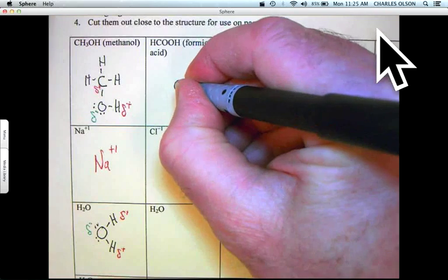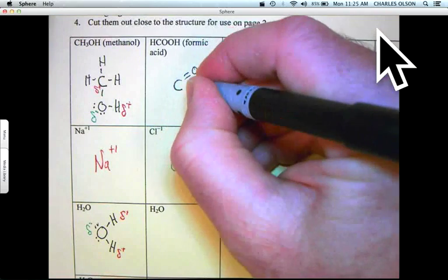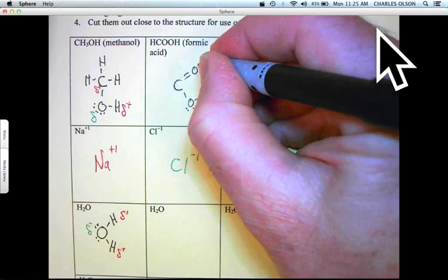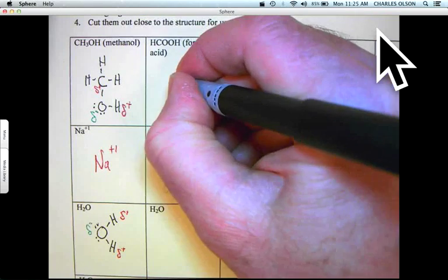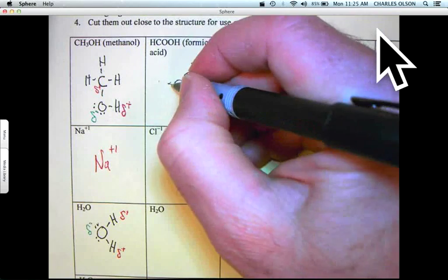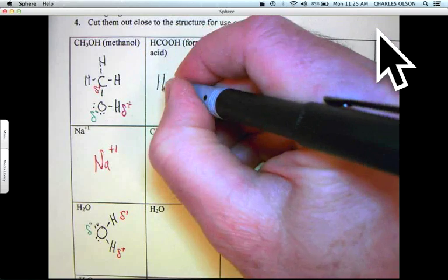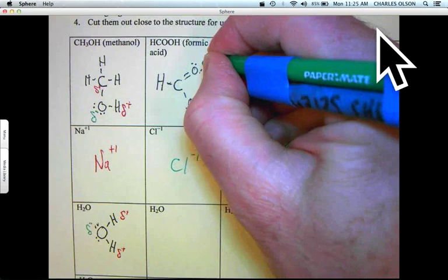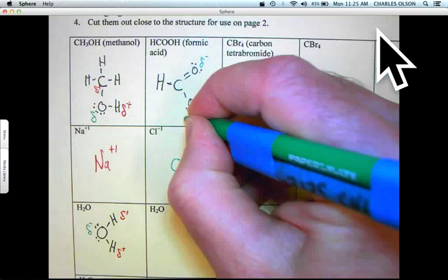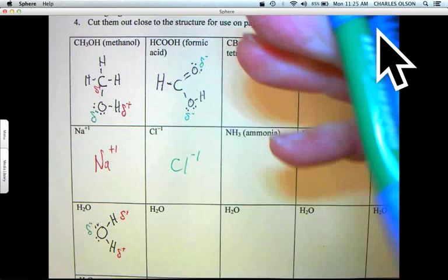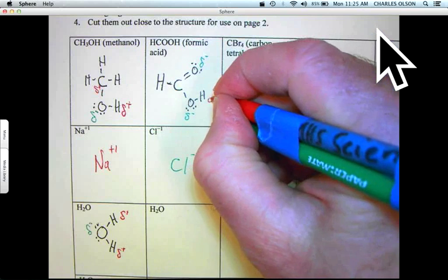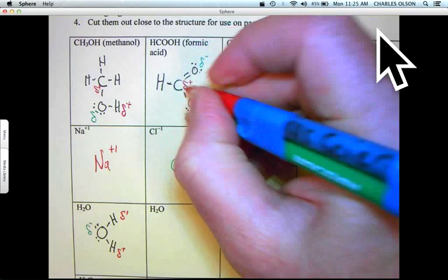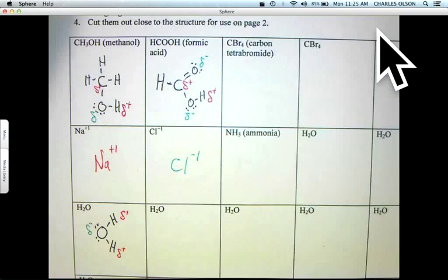Formic acid: COOH. Oxygen, of course, has double bonds. The carboxylic acid group is attached, in the case of formic acid, to a hydrogen. Let's put in the partial negatives in green for the oxygen. Oxygen pulled the electrons away from the carbon, and the hydrogen gives them partial charges.